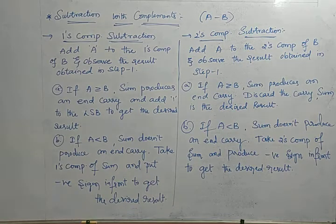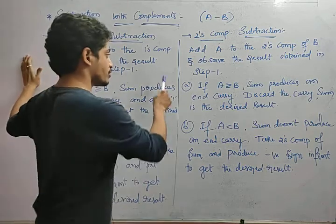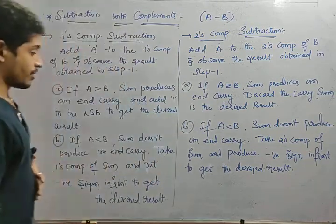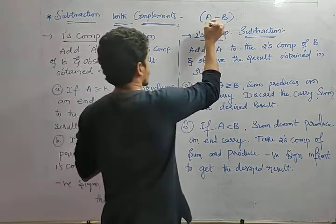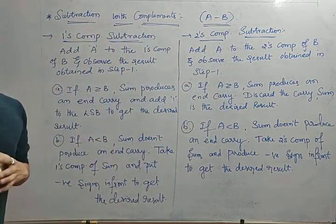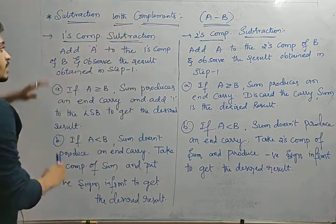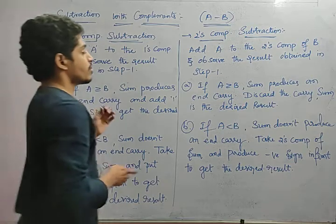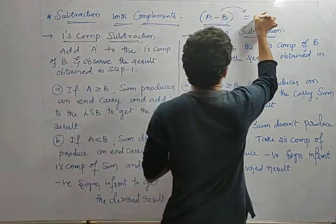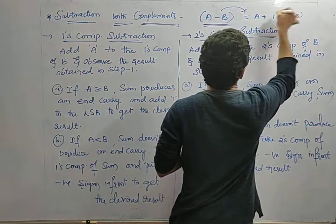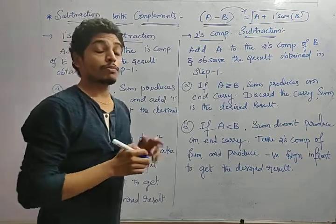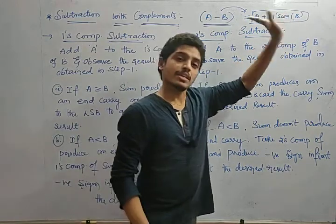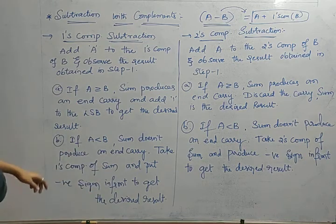This is a very important concept: subtraction with complements. To subtract A minus B using 1s complement, first add A to the 1s complement of B and observe the result. We write A minus B as A plus 1s complement of B. The beauty here is that instead of a separate subtraction circuit, we just complement B and add — the same result comes.